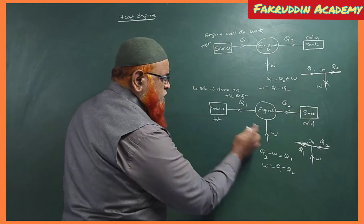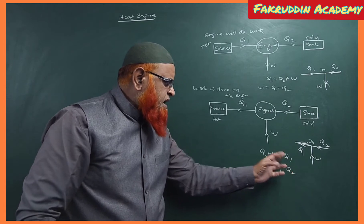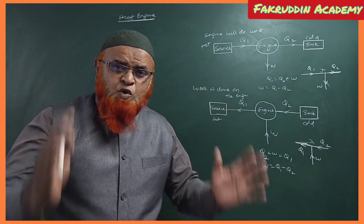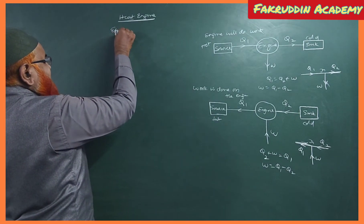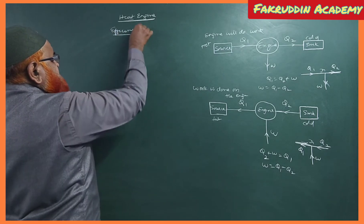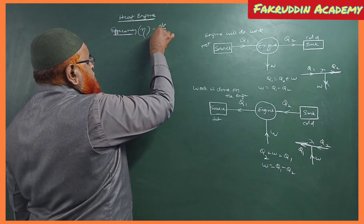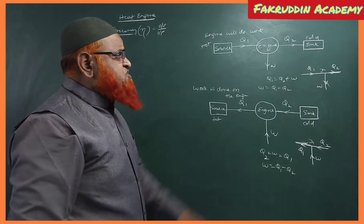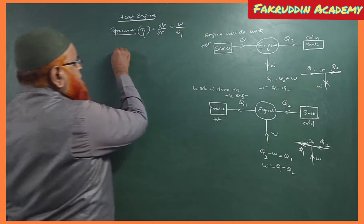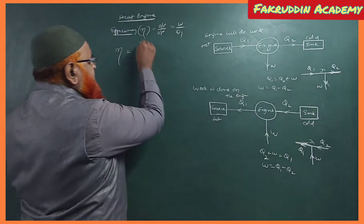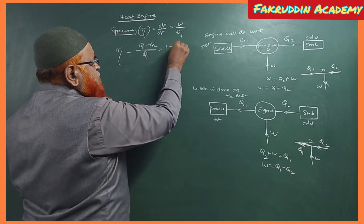Since Q2 and W are meeting the junction and Q1 is leaving, we can write W = Q1 − Q2. This holds for both heat engine and refrigerator. In the heat engine, we measure efficiency. Efficiency is the ratio of output to input, and here the output is work done W and the input is Q1.